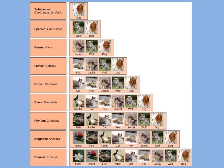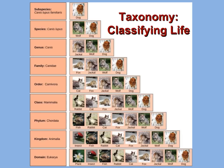Dogs are also animals, so are placed in the kingdom Animalia. They are in the phylum Chordata because their main nerve cord runs down their back. They are in the class Mammalia because the females have mammary glands, and in the order Carnivora because they are carnivores. They are in the family Canidae, the genus Canis — which contains wolves and coyotes — and are specifically Canis lupus, because they are technically wolves, but a special subspecies: Canis lupus familiaris. The science of grouping organisms into taxa is called taxonomy.